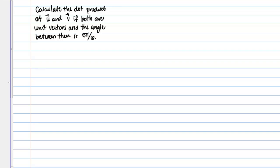Consider the following example. Calculate the dot product of vectors U and V if both are unit vectors and the angle between them is 5π over 6.